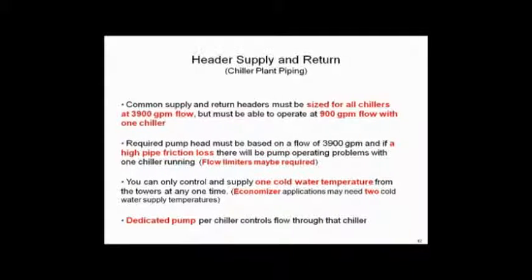Summary: the common pieces of pipe going through the towers and back have to be sized for all chillers at 3900 GPM. So the question is, how will they operate at 900 GPM? That's the question we're trying to ask. The pumps are required at 3900 GPM, so you've got to pick your pumps as if you've got full flow through the pieces of pipe at high friction loss.